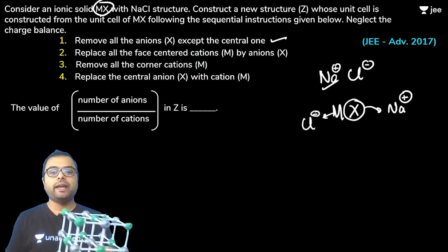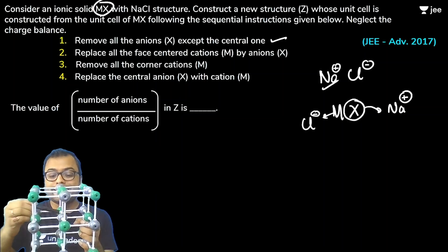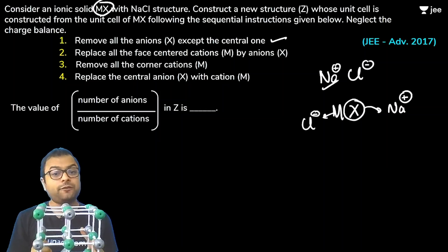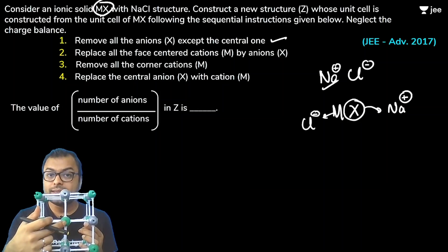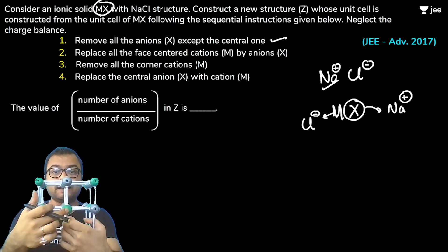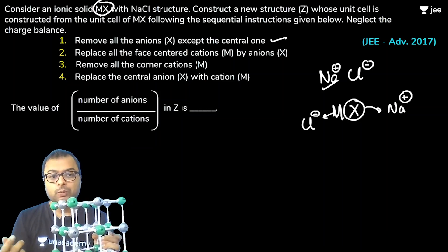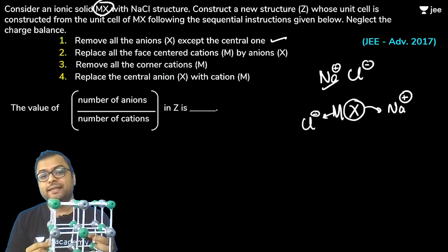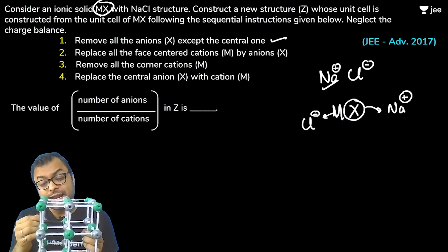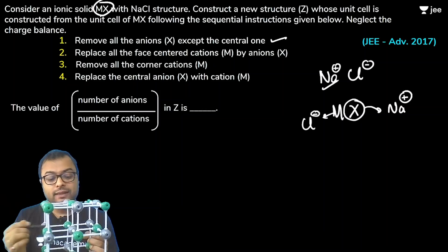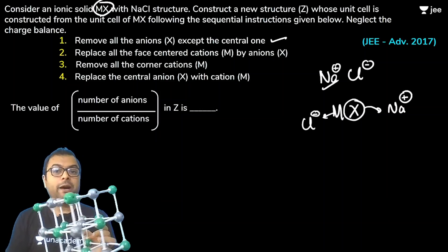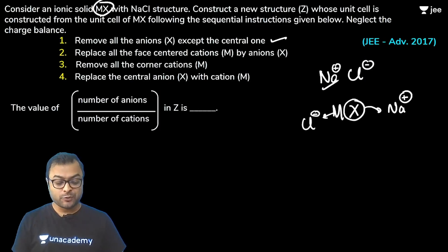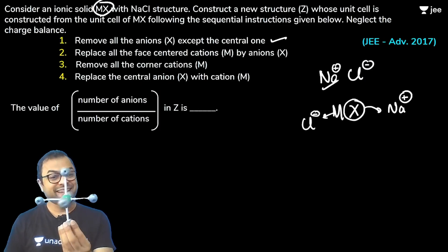So normally in the NaCl structure, Na⁺ is at the body center position — the gray colored item. But they say: remove all the X ions except the central one. That means all the edge-center X ions are removed, only the body center X remains. Then remove all the corner cations M. Then replace the central X ion with cation M. The end result I get after applying this on the model is what remains.